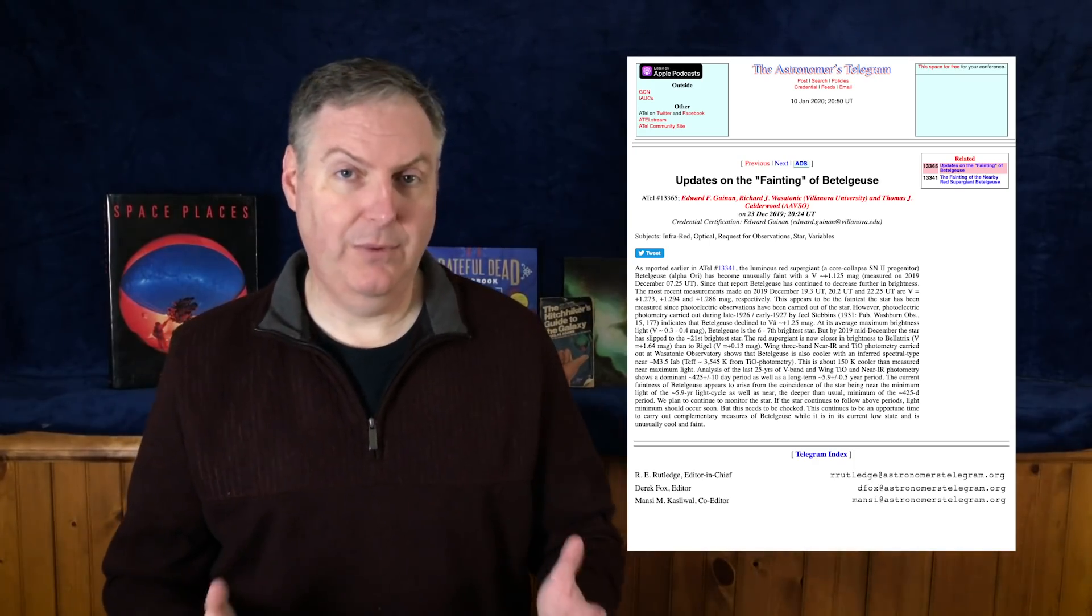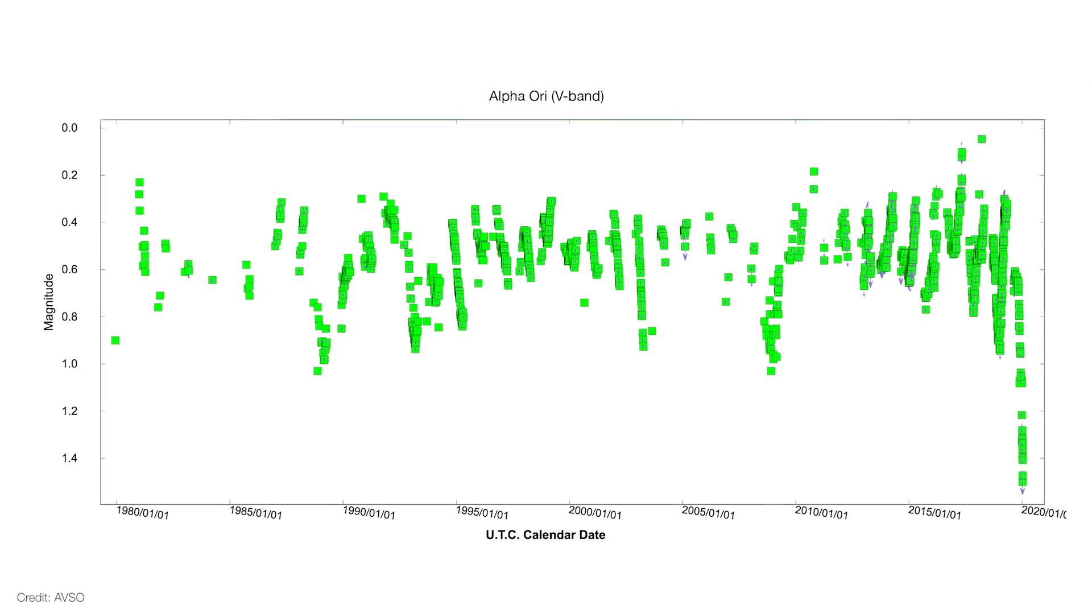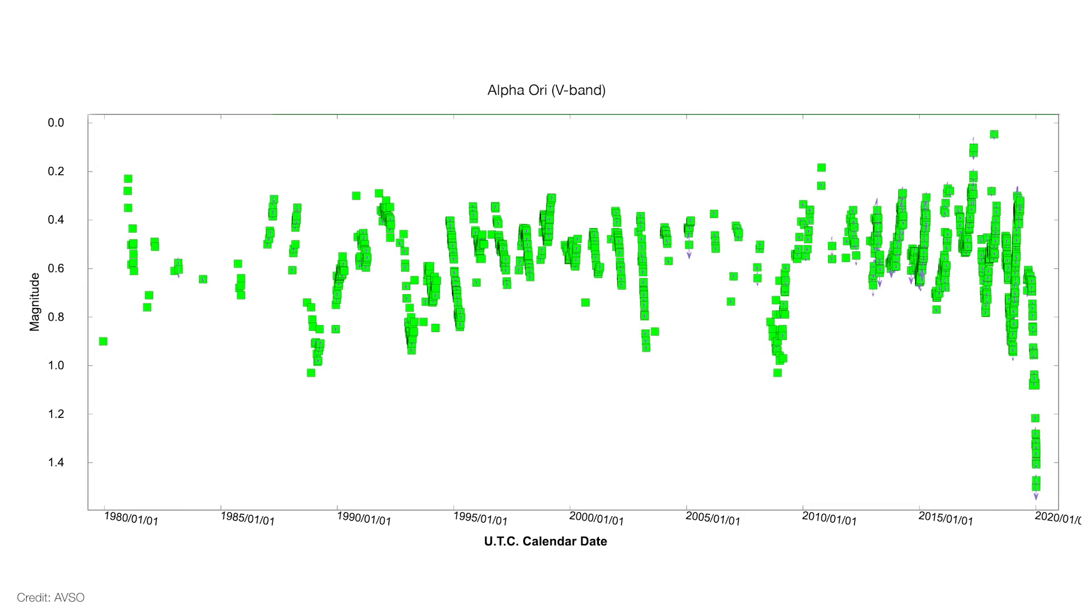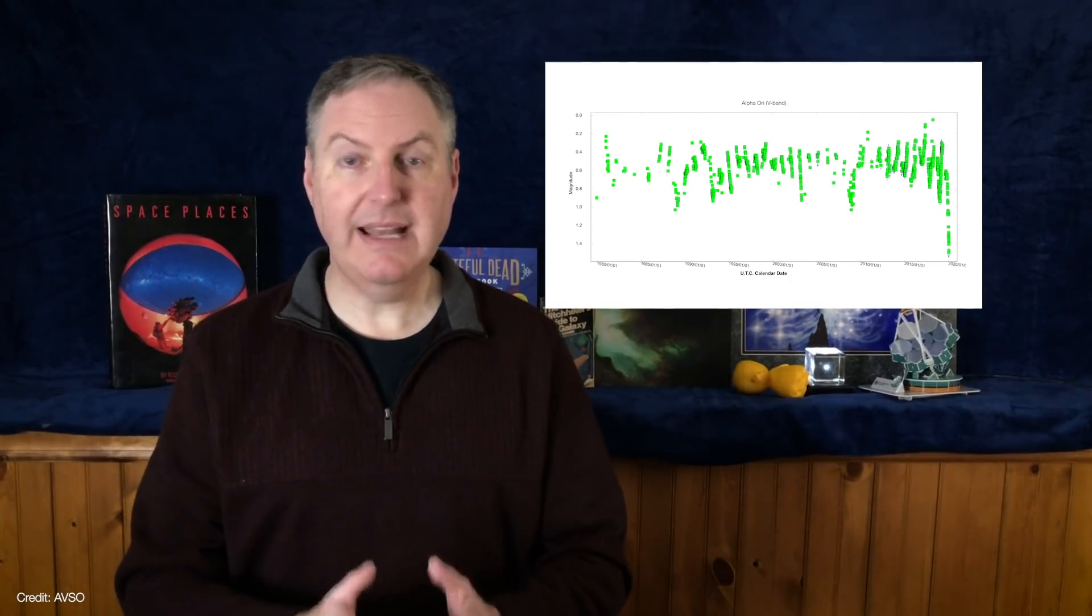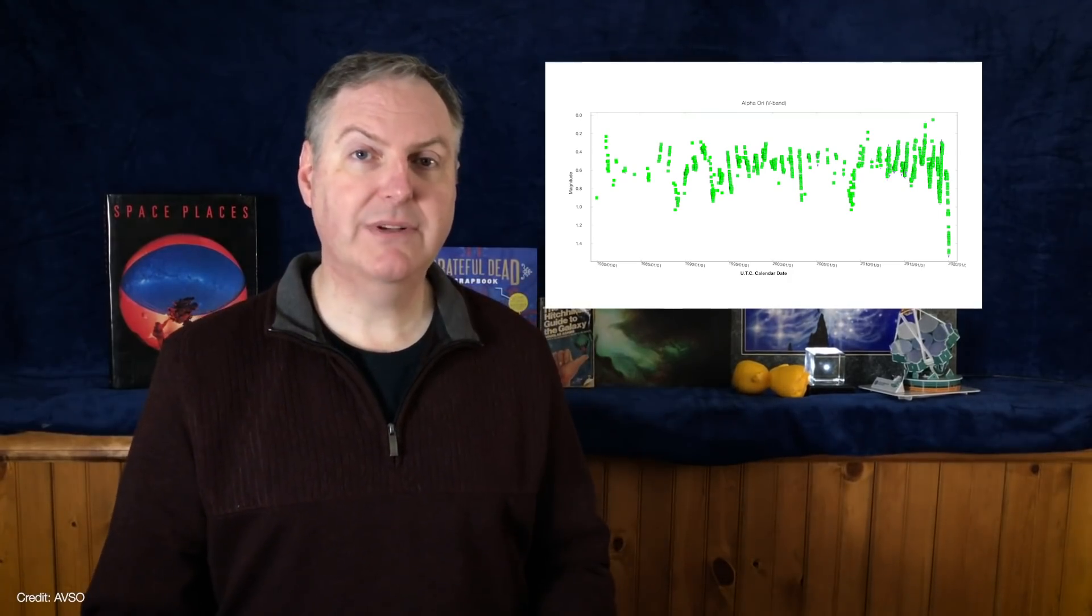Now, putting all of this another way, Betelgeuse has lost at least half of its typical brightness over the course of just a couple of months. Now, that's a rapid drop-off in light, and now it's the faintest that's been recorded using modern photometric techniques. Naturally, this got some people wondering if this was somehow the calm before the supernova storm.